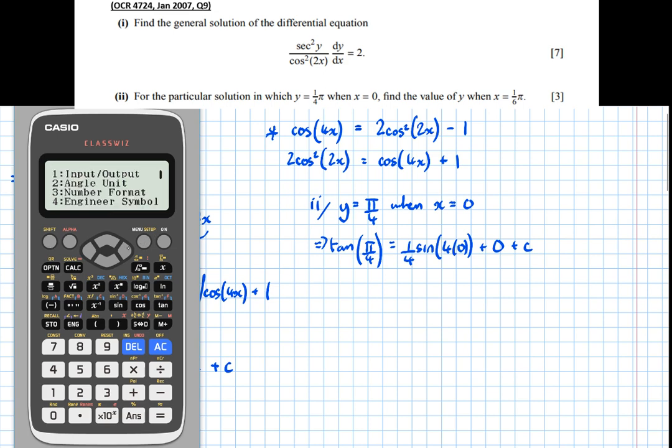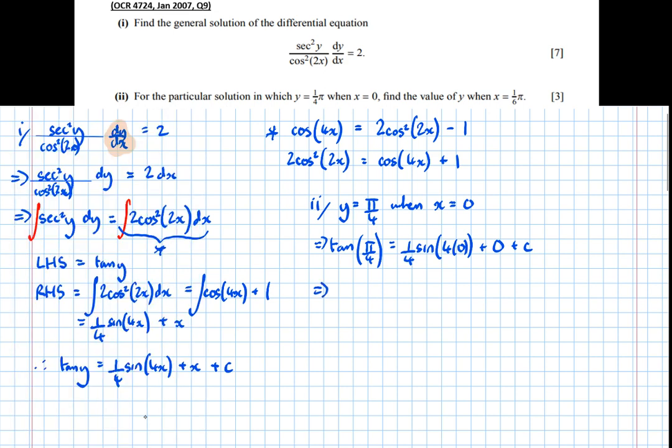So I'll go and change that. I change that by pressing shift, then the menu or setup button, and change the angle unit, which is option 2, into radians. So all I need to do is press equals again, and I should end up with a nicer number, which I do. Which means that 1 equals, well, that's 0, that's 0, so 1 is c.